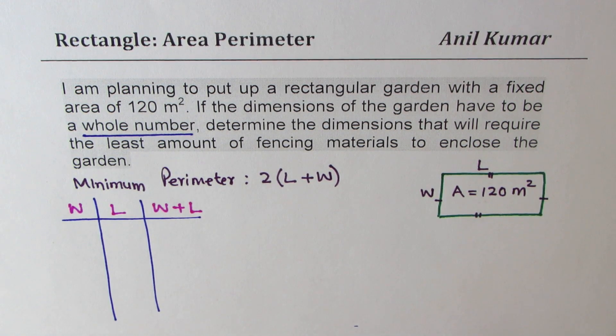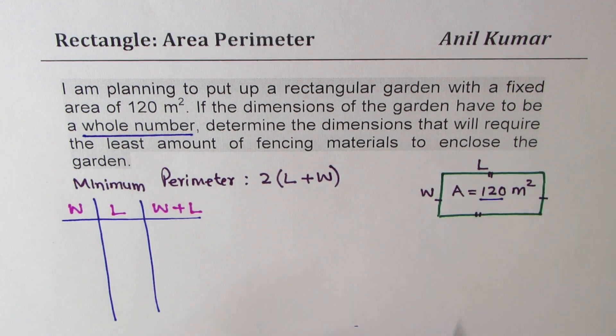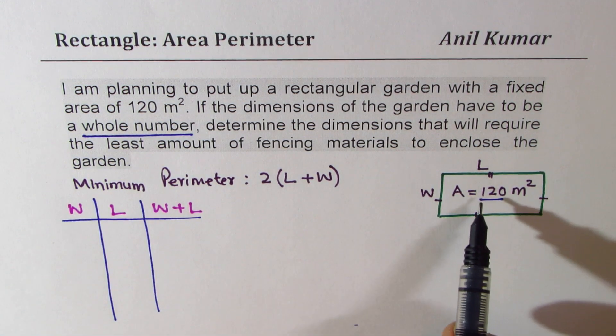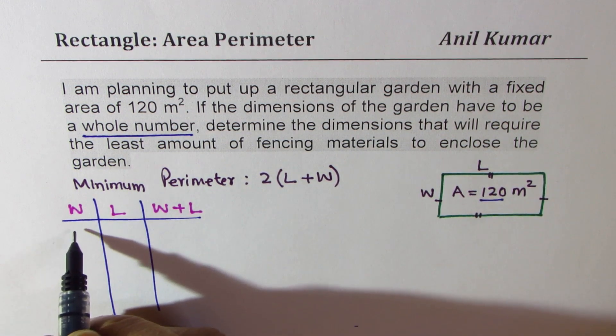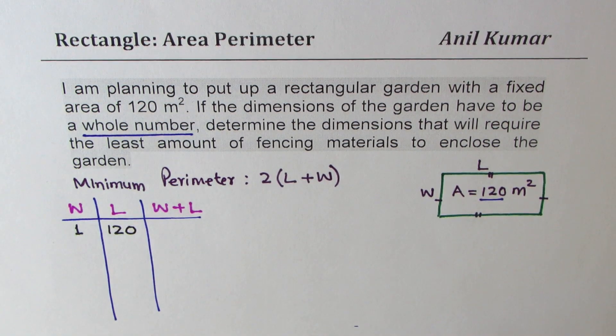for all possible values which will give area of 120, the combination which gives us minimum width plus length will be our solution. So area of 120, how can you get 120?